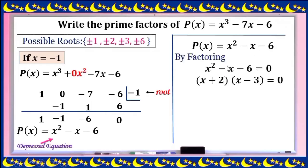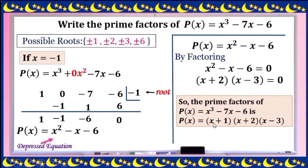Now solve for the other roots by factoring x² - x - 6. We need factors of -6 whose sum is -1: try 2 and -3. Since 2 × (-3) = -6 and 2 + (-3) = -1, this works. Converting the root -1 to a factor gives (x + 1). The remaining factors are (x + 2) and (x - 3). So the complete prime factorization is (x + 1)(x + 2)(x - 3).